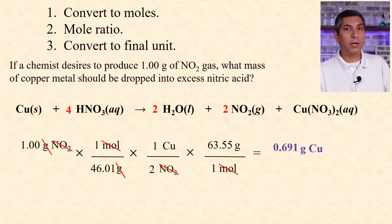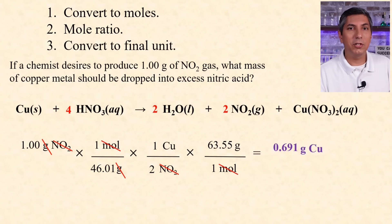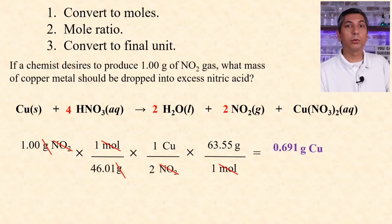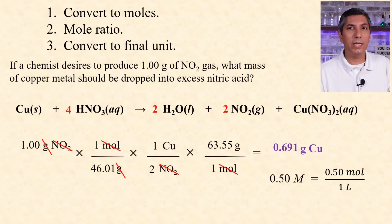There are sometimes variations of this. We're sometimes given two reactants and have to decide which is the limiting reactant, so we do the problem twice and see which reactant produces less product. Or we have a solution and use molarity as a conversion factor — for example, 0.50 molar would be 0.50 moles equivalent to one liter. Sometimes we have to use the ideal gas law to figure out how many moles we have in lieu of converting to moles in step one.